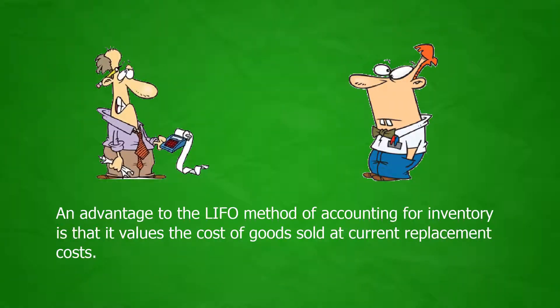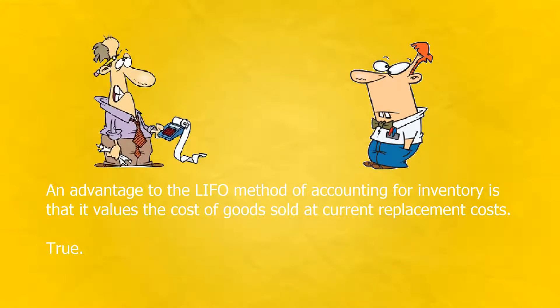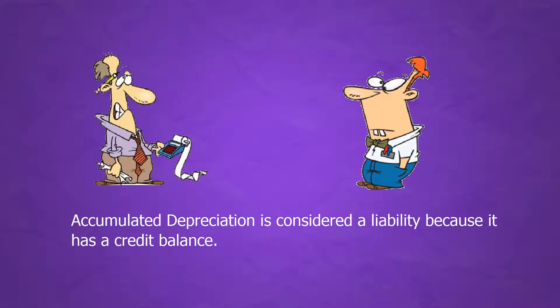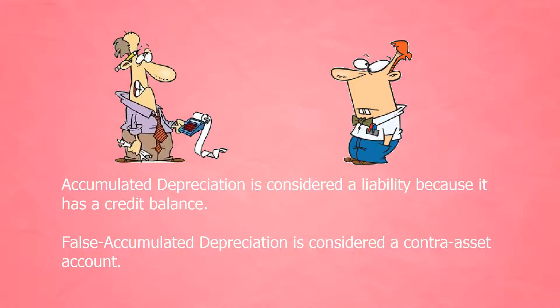An advantage to the LIFO method of accounting for inventory is that it values the cost of goods sold at current replacement costs. True. Accumulated depreciation is considered a liability because it has a credit balance. False. Accumulated depreciation is considered a contra-asset account.